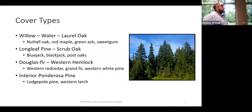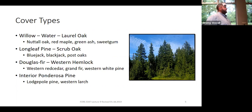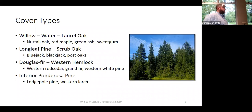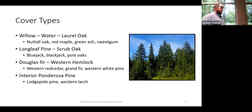Starting with the willow, water, laurel oak cover type: you had a pretty good range of shade tolerances — red maple as your shade tolerant species and some intolerant species, with most things in the intermediate range. If you're going to do patch selection, that's going to favor the intolerant species. You're going to get more nuttall oak and more sweetgum. That could be a decent timber stand and a decent wildlife stand.